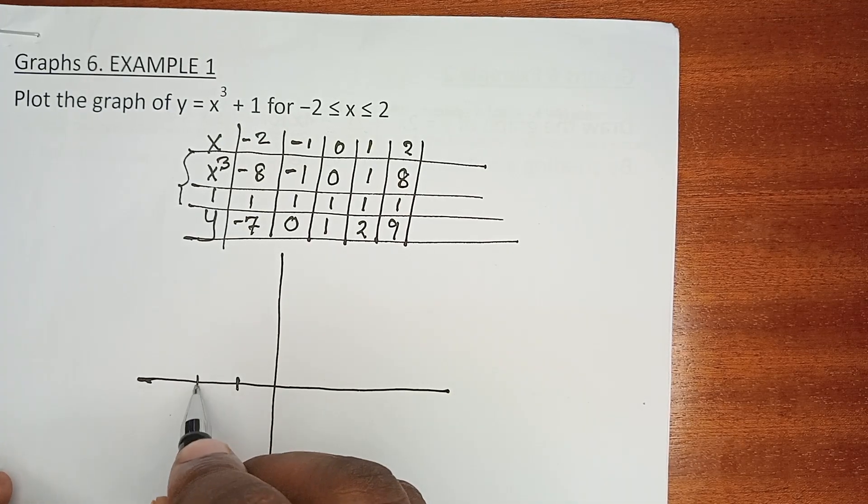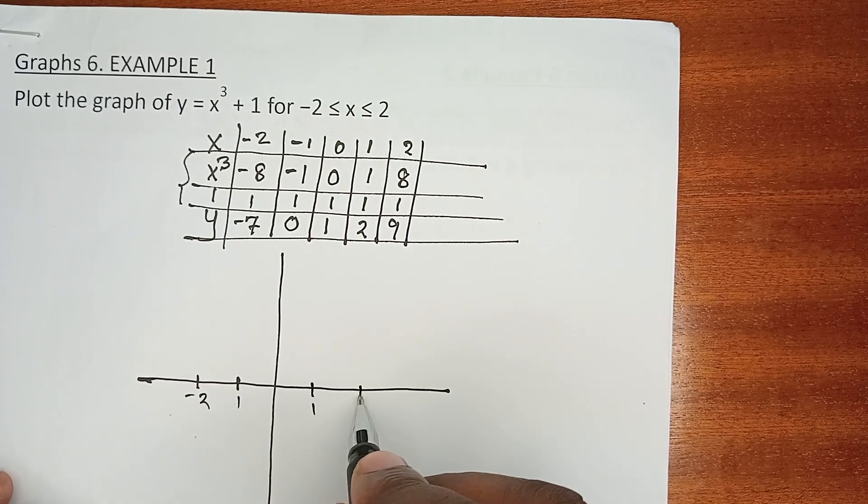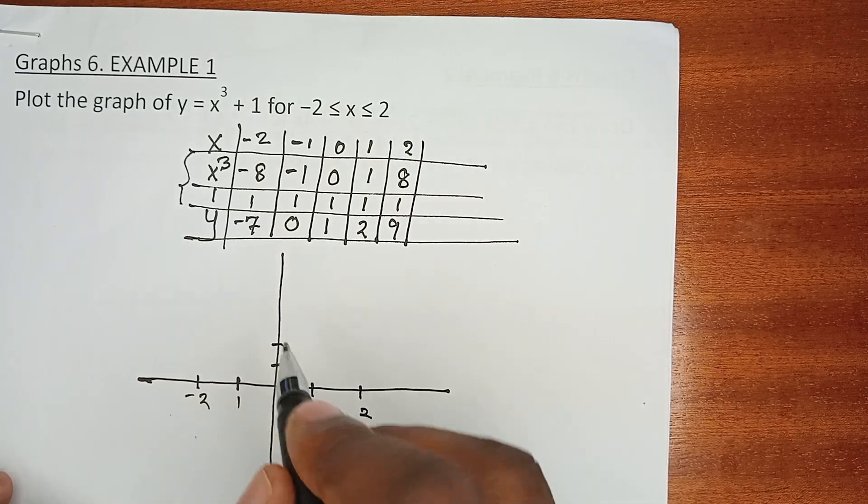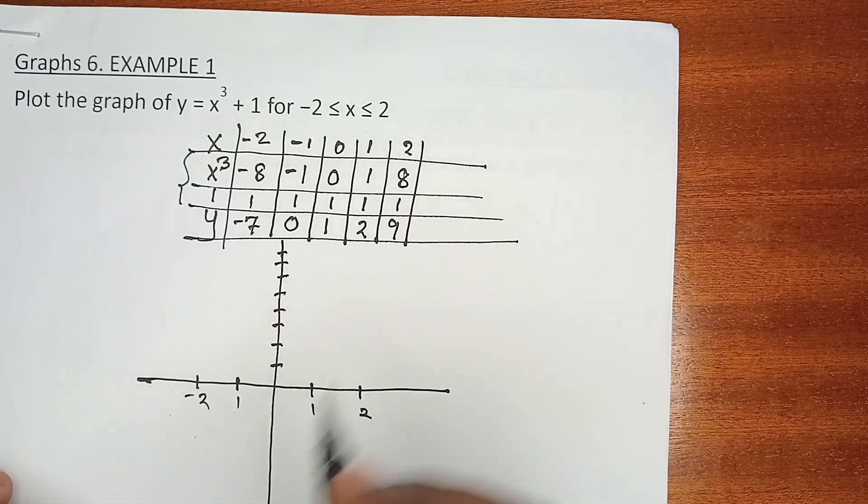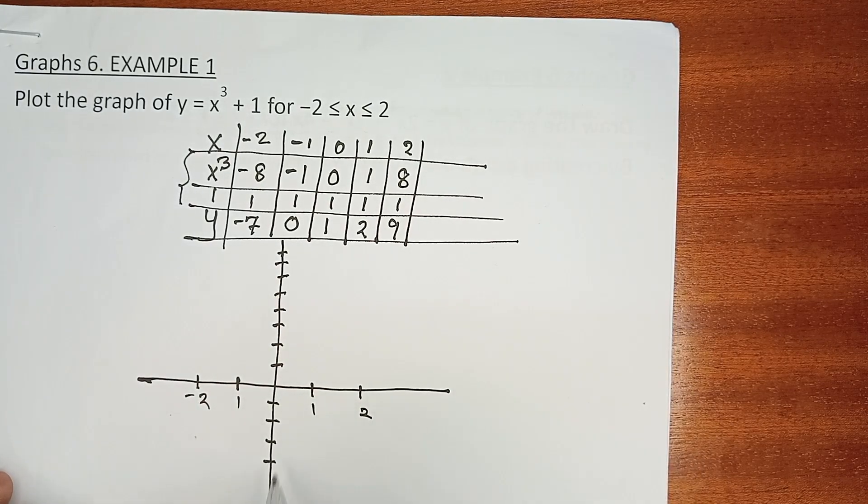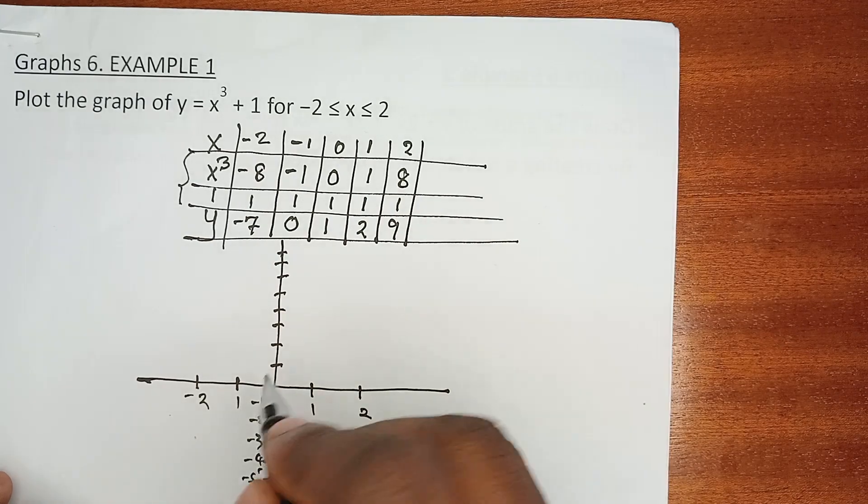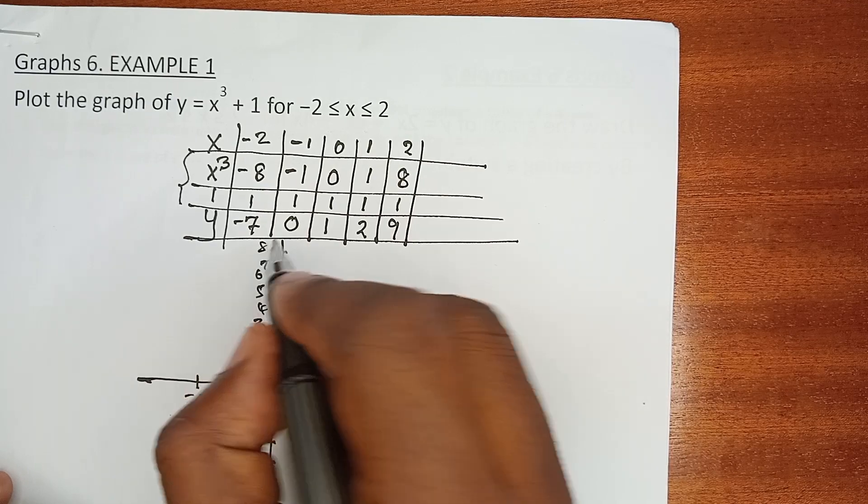When x is negative 1, negative 2, that is 1 and 1 and 2, and then y is 1, 2, 3, 4, 5, 6, 7, 8, and even 9. And negative values: minus 1, minus 2, minus 3, minus 4, minus 5, minus 6, minus 7. Then on the x-axis: 1, 2, 3, 4, 5, 6, 7, 8, and possibly 9.